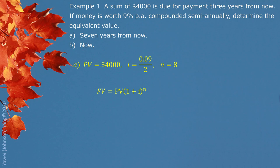Put the values into the formula. We are looking for future value, so here we use a positive exponent of 8. It turns out that if we pay off this debt 7 years from now, we should pay $5,688.40.